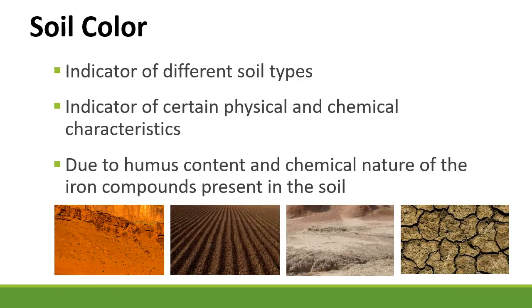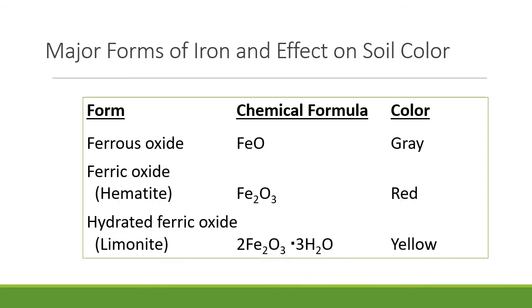Color is very apparent when you look at soil. We can have dark soils like those in the cornfields of Iowa and Illinois. Different colors indicate different physical and chemical characteristics. Humus and the amount of organic matter can also change soil color. Iron is another important factor — ferrous oxide (Fe2O3) makes soil very red. Gray soils may have a lot of ferric oxide. Yellow soils are often seen in soils that have been underwater. So just different forms of iron create very different soil colors.